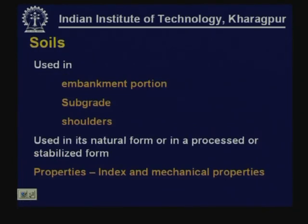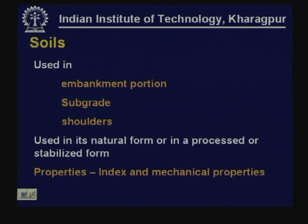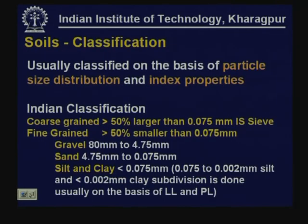As mentioned, in this lesson we are focusing mostly on subgrade soils and embankment soils; other materials will be dealt with in subsequent lectures. Soils are used in the embankment portion and in subgrade — the portion right below the pavement prepared to standard specifications and to attain certain specified strength. Soils are also used in preparation of shoulders, either in natural form or processed or stabilized form. The most common properties determined are index properties or mechanical properties. Soils are classified using various systems based on particle size distribution and index properties.